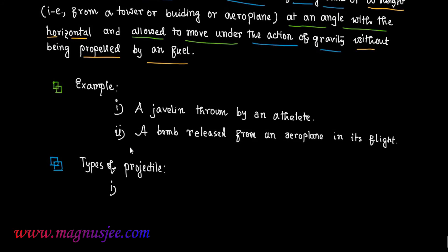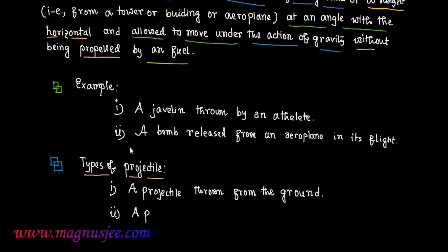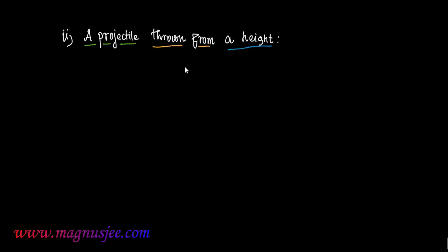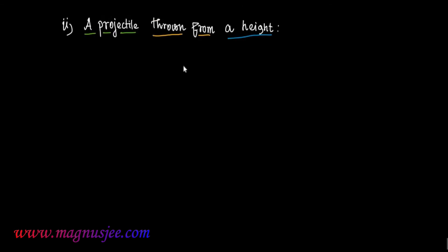Now, the types of projectile. Number one is a projectile thrown from the ground. Number two is a projectile thrown from a height or altitude — that is the second type of projectile.